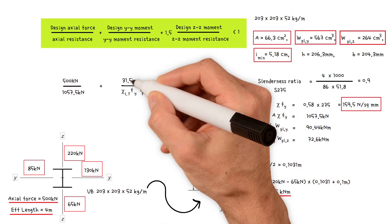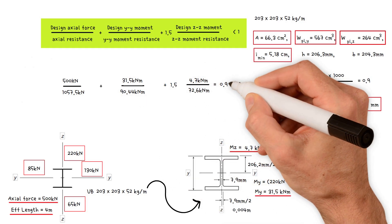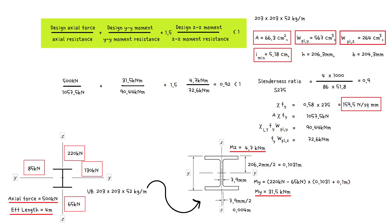Substituting into our equation, this gives us a value of 0.92, which is less than 1. Therefore, the column section is adequate.